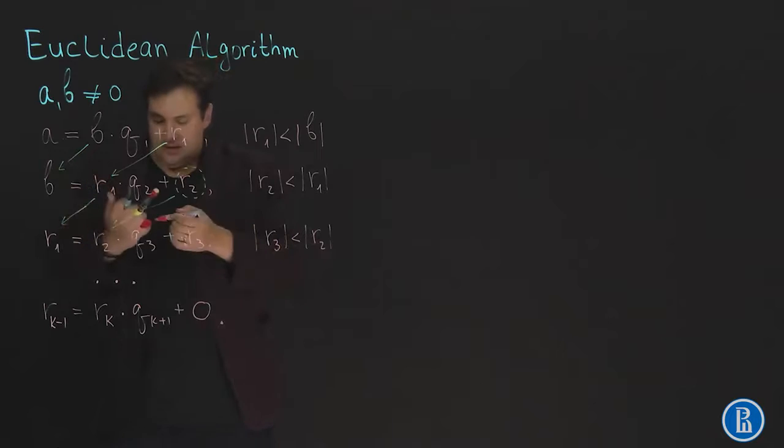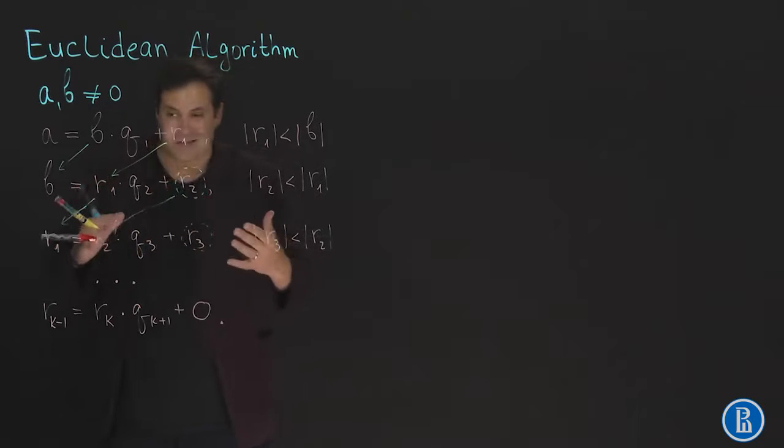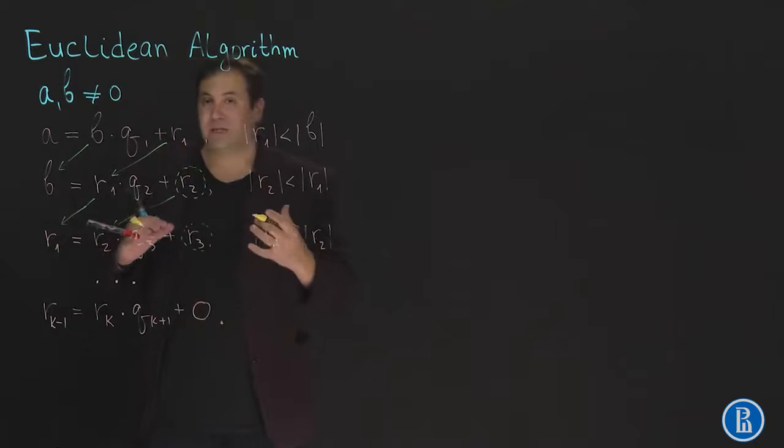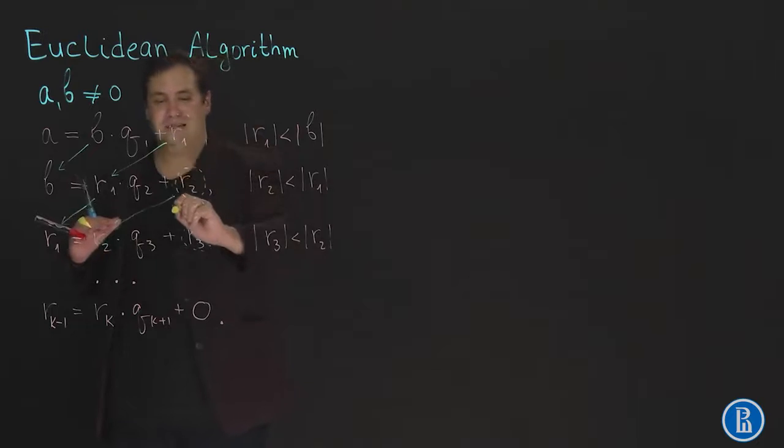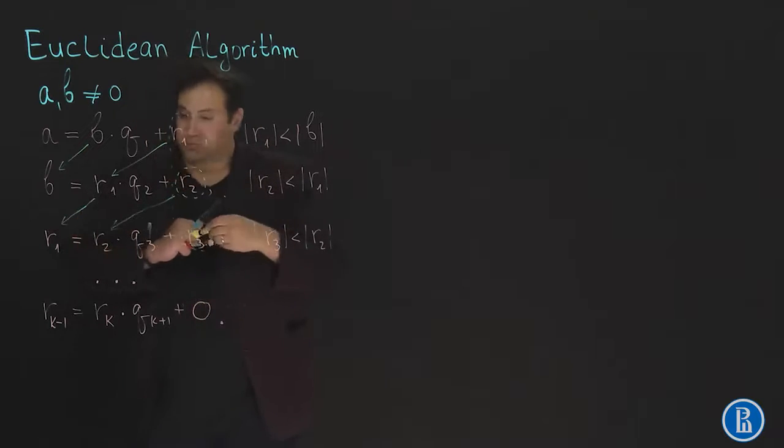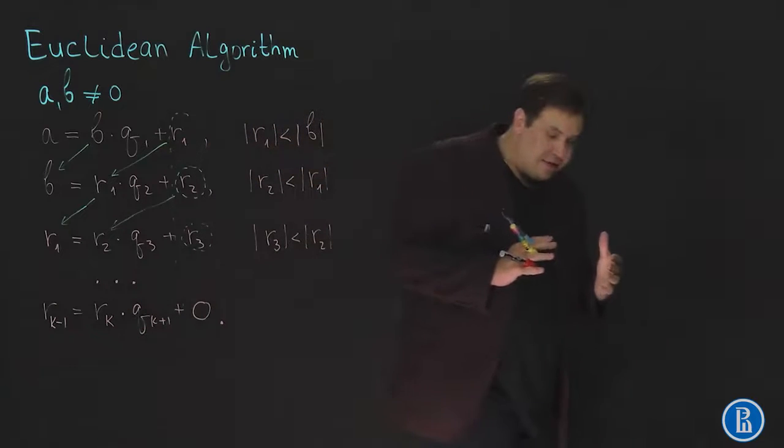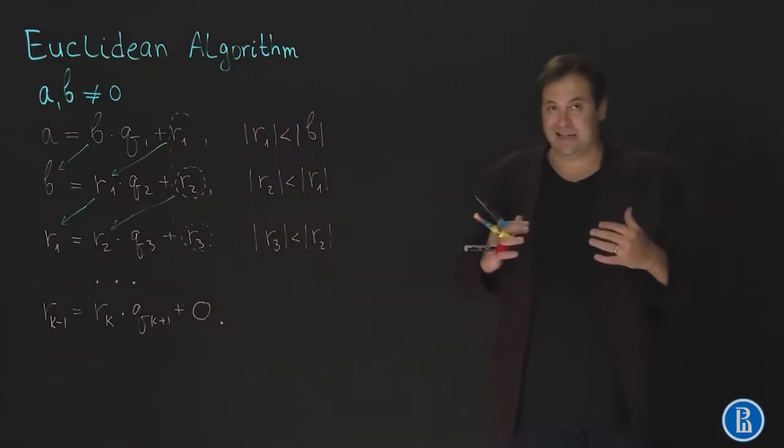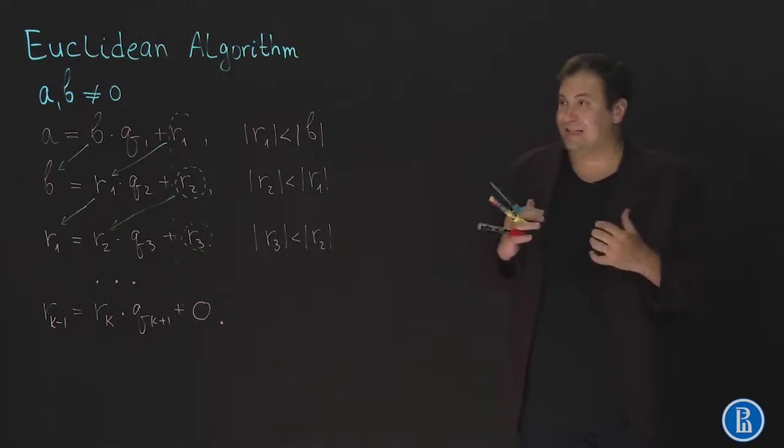We will further on discuss why this algorithm is so useful. But let me just now show you an interesting property of remainders in this algorithm. The property is that remainders can be linearly expressed via A and B. What does this mean?